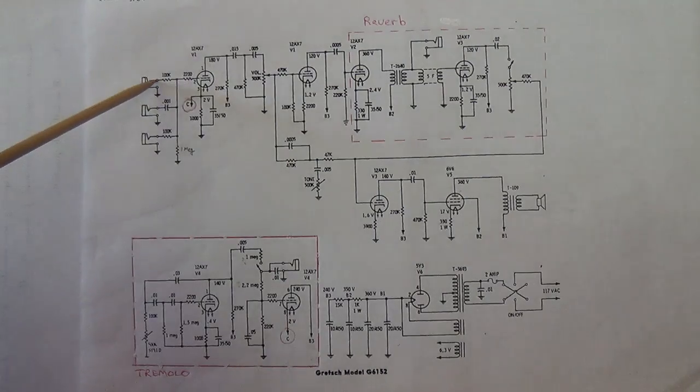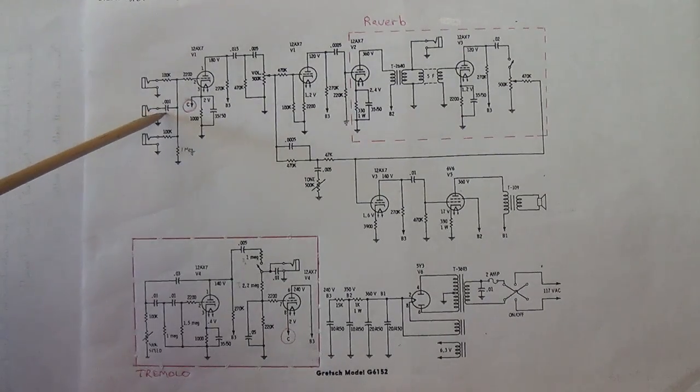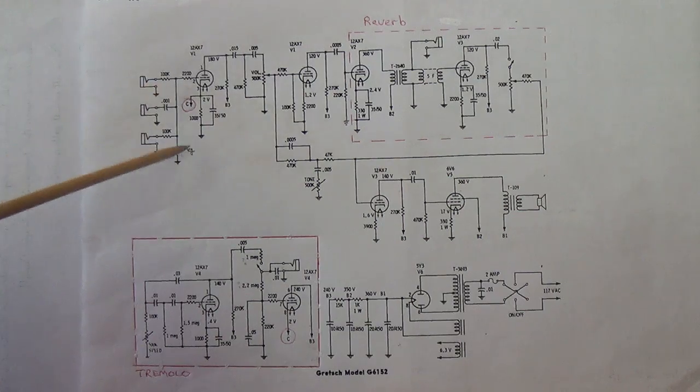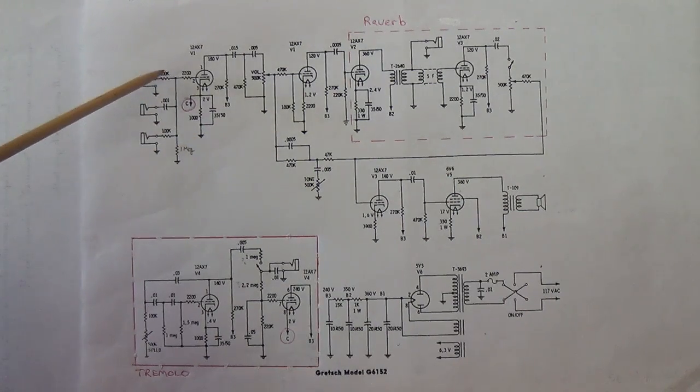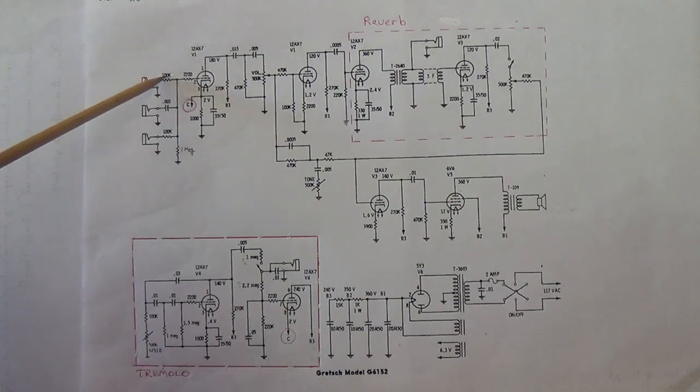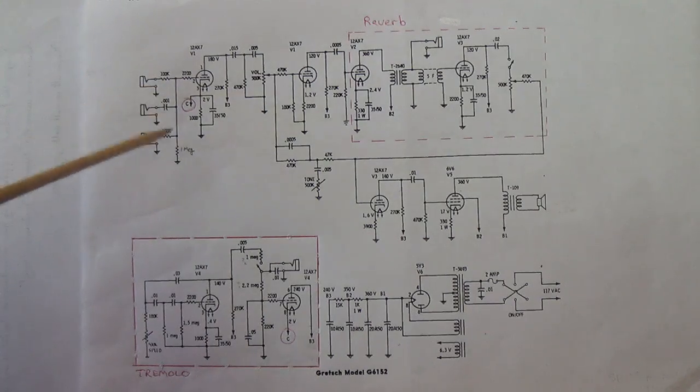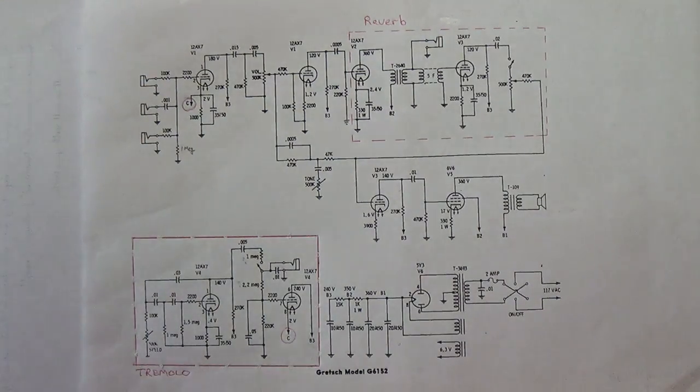Up here on the inputs I'm not going to have the treble input, I see no need for that. I'm going to have two separate inputs and I might vary the impedance maybe 100k and 500k something like that so I'd have a high and low impedance input.